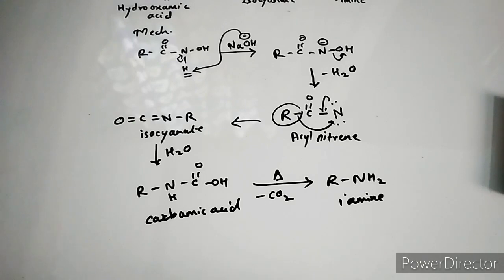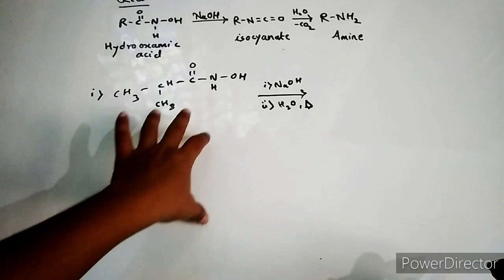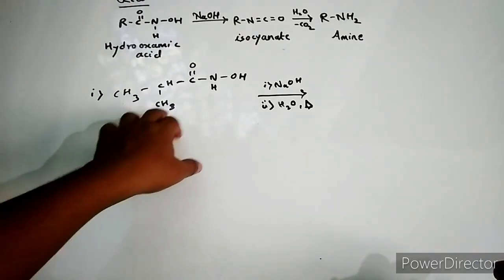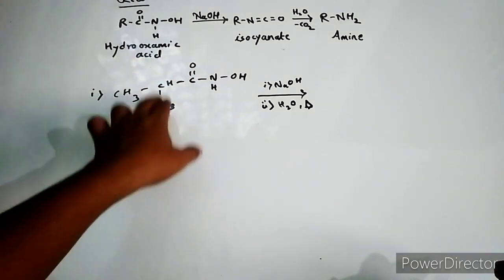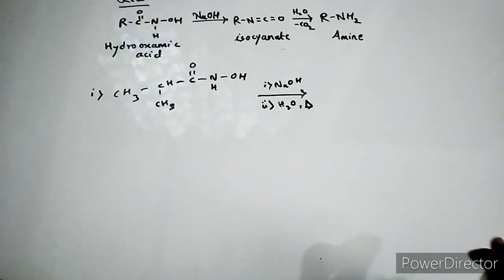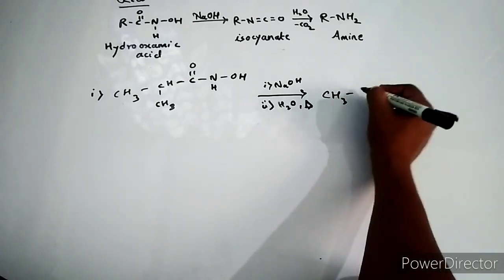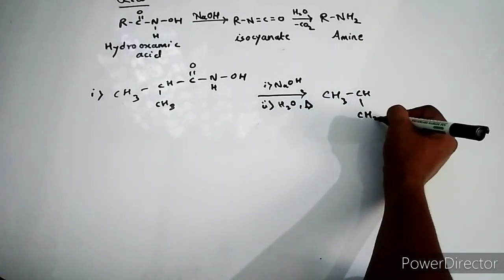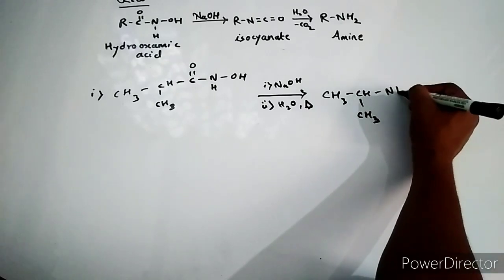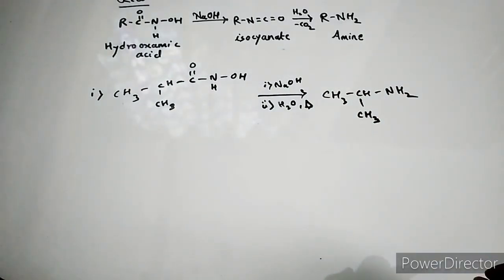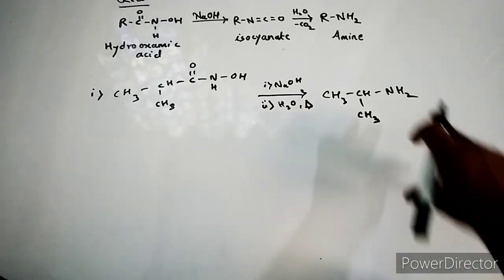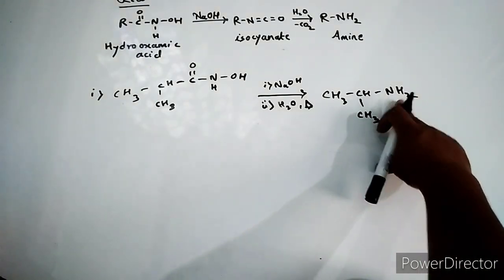Now we are going to solve some problems. Here is our first problem. We have isopropyl hydroxamic acid and the conditions are sodium hydroxide, H2O, and heat. I will try directly the final product. Here what we are going to get is two amino propane, or you can say isopropyl amine. This is a primary amine, not to be confused.